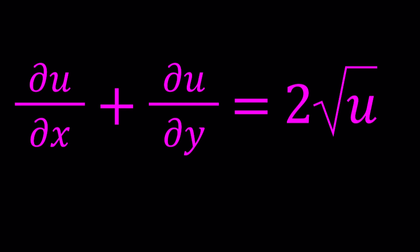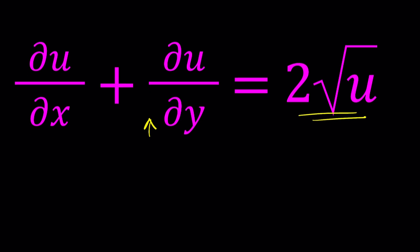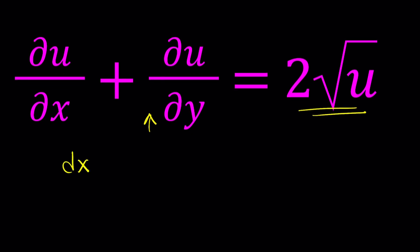So here's how it goes. You look at the coefficient of the partial derivative with respect to x, which is 1. This is also 1. And on the right-hand side, we have a function of u, which is important. So here's how we translate it. We write dx over 1 equals dy over 1 equals du over 2 root u. You see how that works? At least that's how I think it works. Correct me if I'm wrong, but this is how I interpret it.